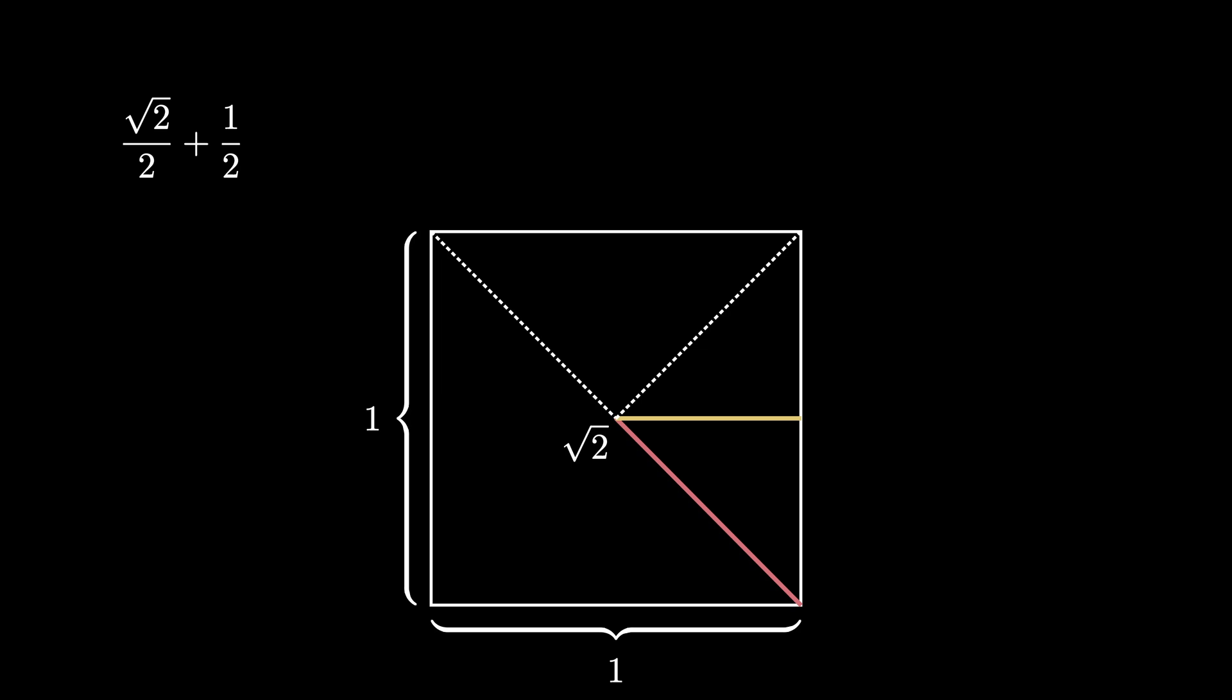But then we can repeat this exact picture in the upper right corner. We take half of the diagonal line to be square root of 2 over 4, half of the horizontal line to be 1 fourth, and we can repeat this process over and over. Each time we take half of the previous diagonal and half of the previous horizontal.